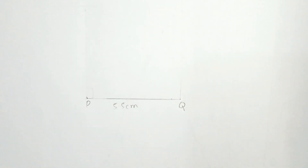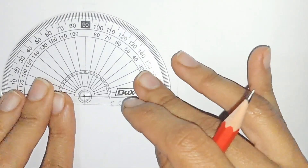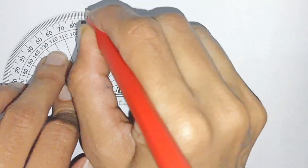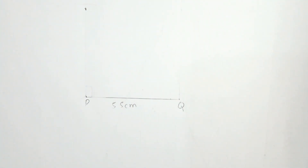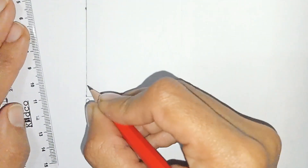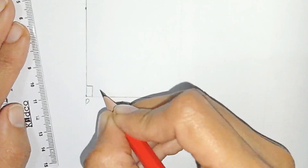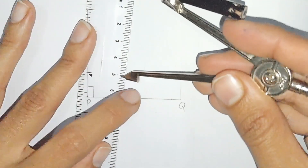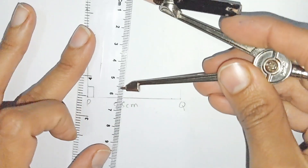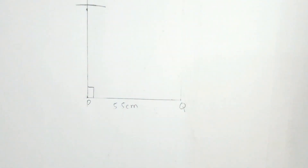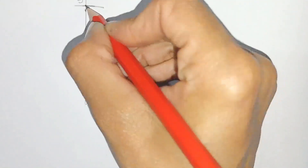After drawing the line PQ, mark the angle at point P — mark an angle of 90 degrees. This is the angle of 90 degrees at point P. Now, since this is our square, we have to open the compass to 5.5 centimeters.